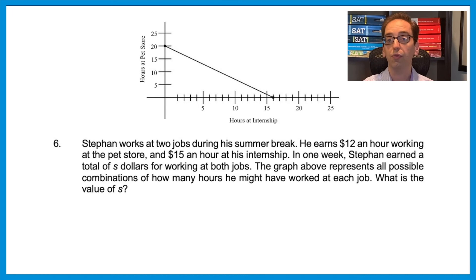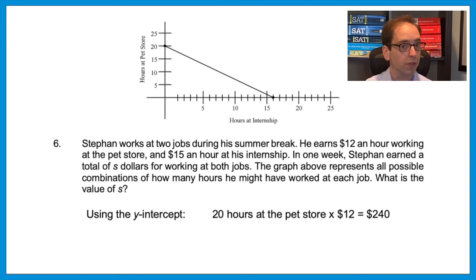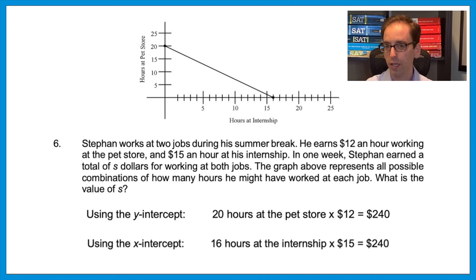What do I mean? Let's look at that y-intercept. If we're at the y-intercept, it means he worked 20 hours at the pet store. But more importantly, it means he worked zero hours at the internship. That will make that term go away. So let's just pretend he only worked 20 hours at the pet store. If he worked 20 hours at the pet store, that would be 20 times $12 an hour would give us $240. The answer is $240. Now the same thing would be true if we went to the x-intercept instead. Let's prove it. Going to the x-intercept means he worked 16 hours at the internship. But more importantly, it means it was zero at the pet store. So now 16 hours at the internship times $15 an hour is $240. No matter how you do it, the answer will always be $240. So when they give you a graph measuring two different rates, use one of the intercepts. That makes the other variable disappear.